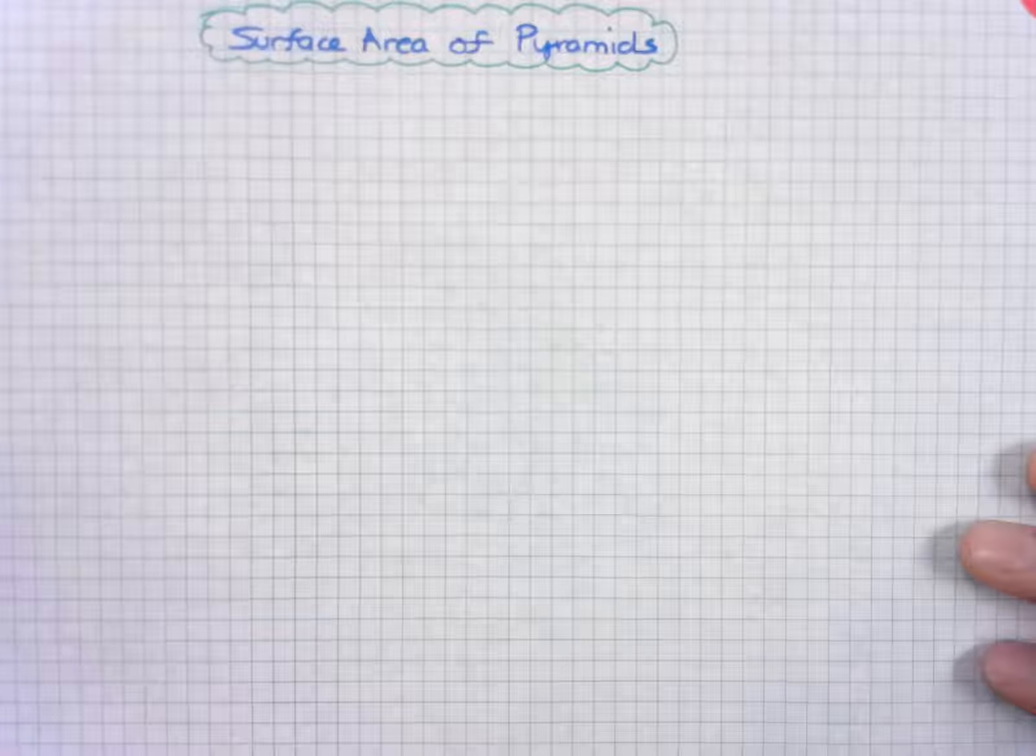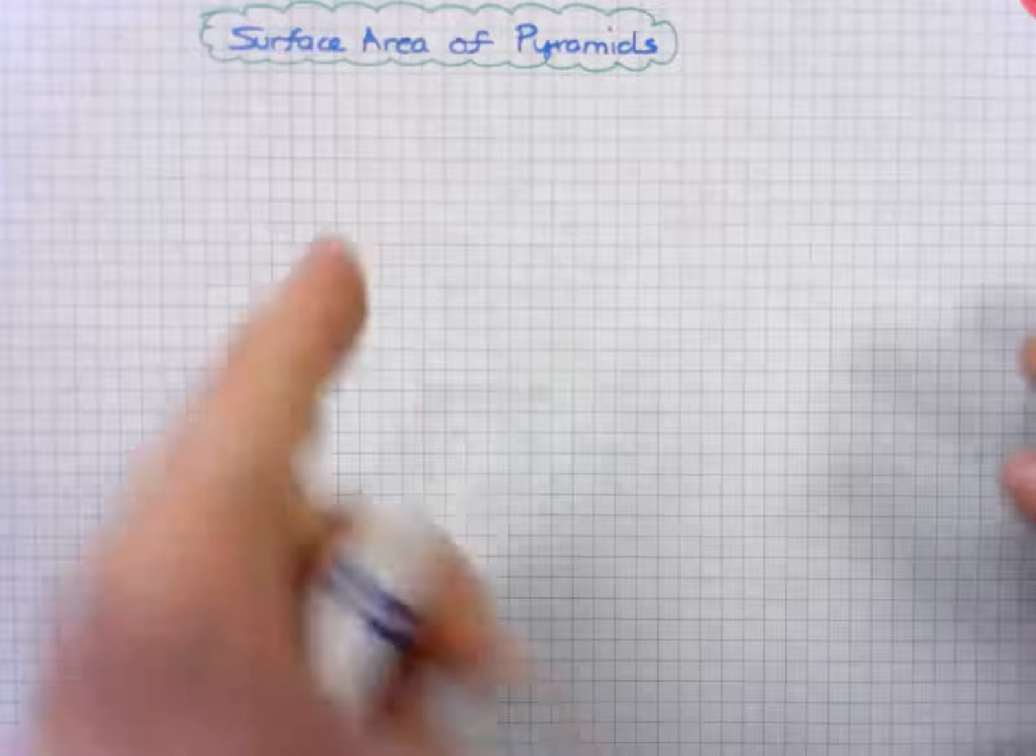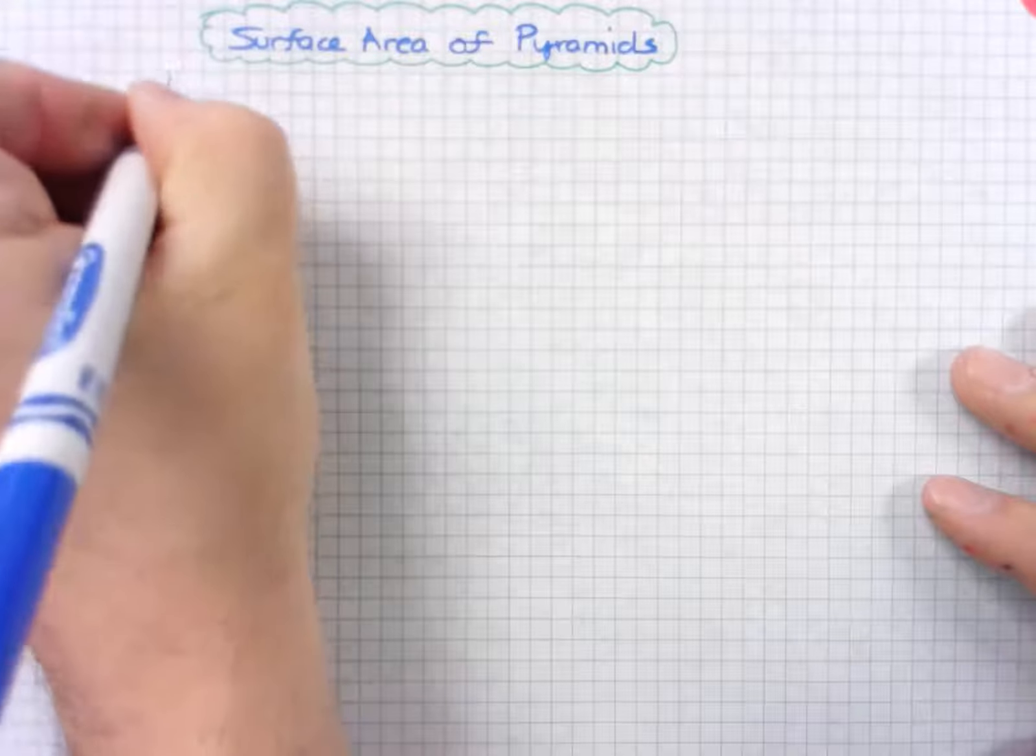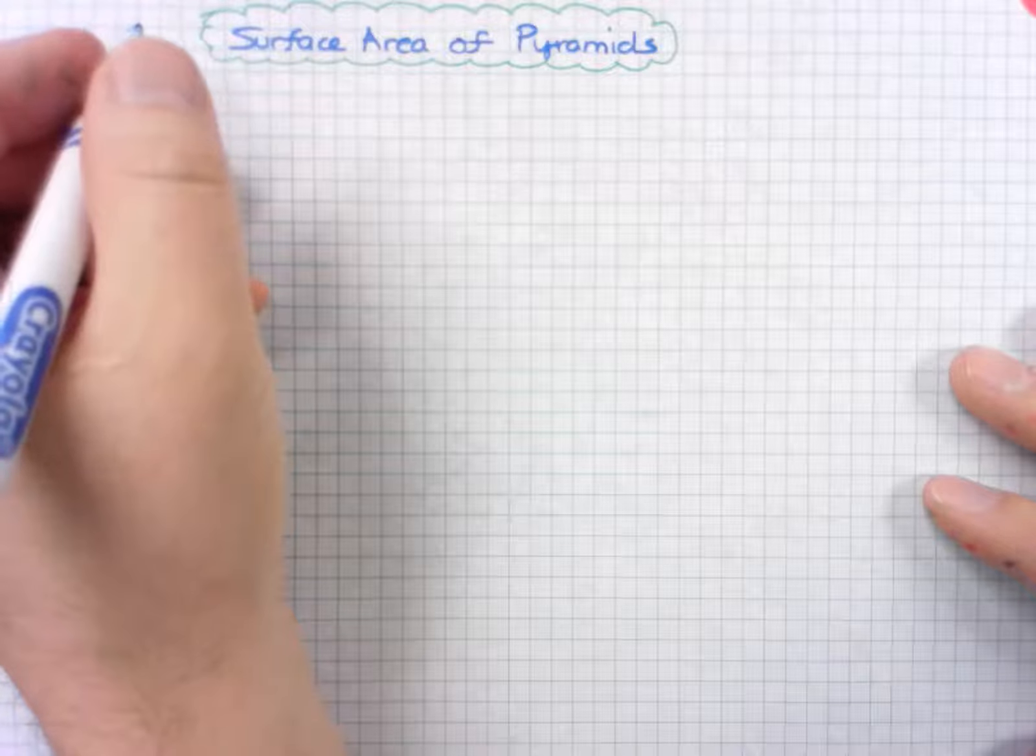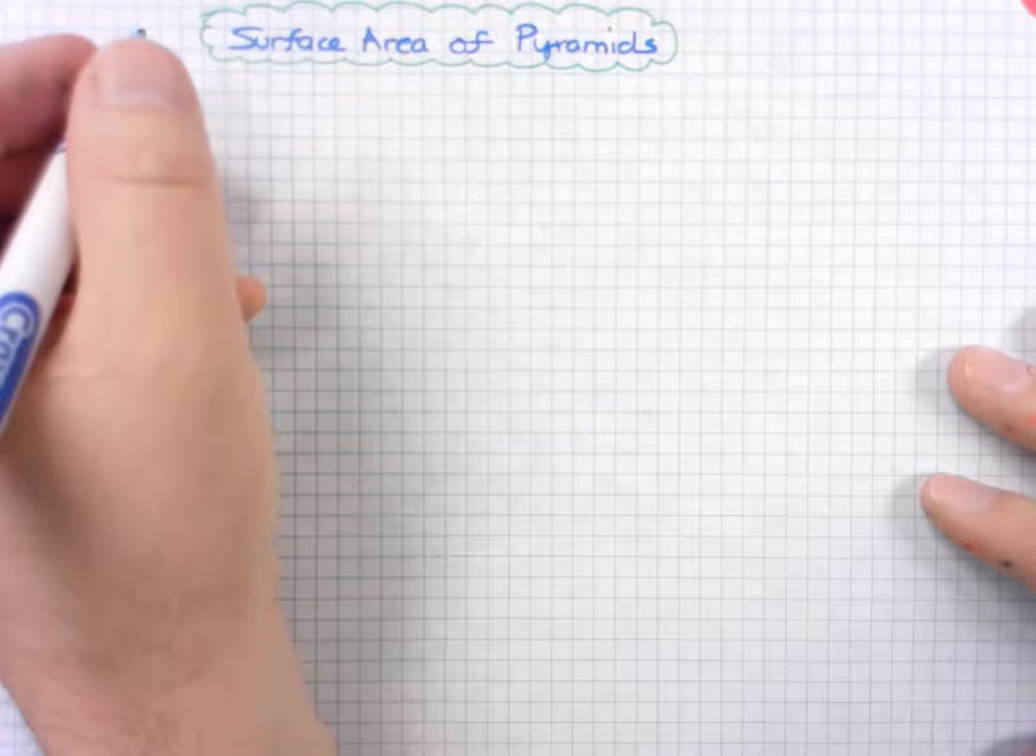Surface area of a pyramid. A pyramid is a 3D figure with at least three triangular sides that meet at a common vertex and only one base that is a polygon.